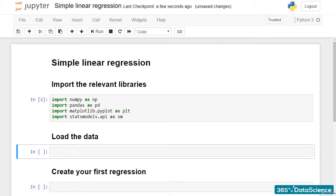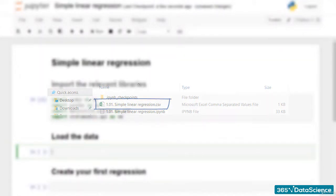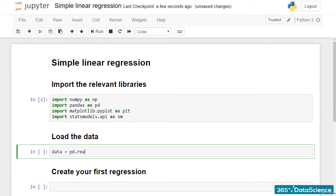I have all my data in this CSV file called 1.01 simplelinearregression.csv. Let's load it in a new variable called data using the pandas method, read_csv.